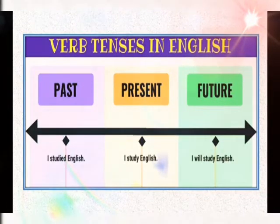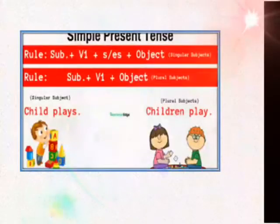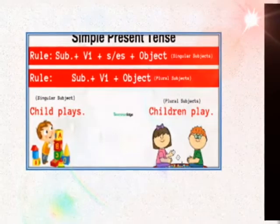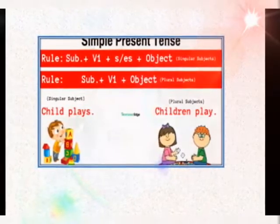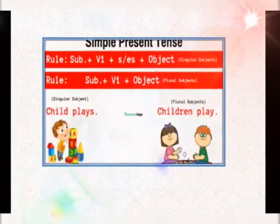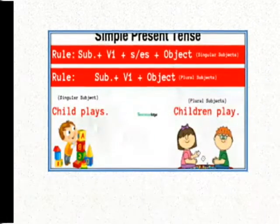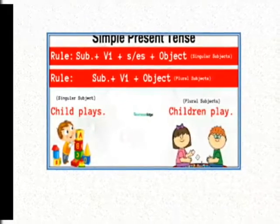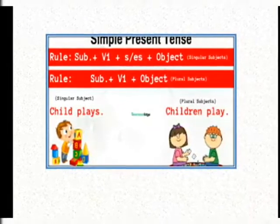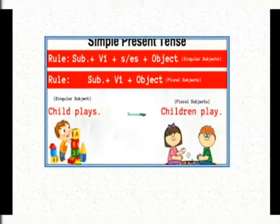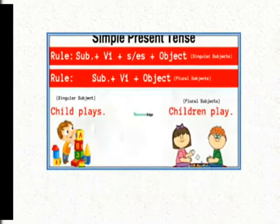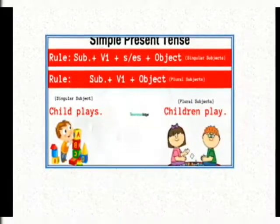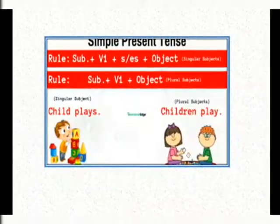Simple present tense tells us about the activities which happen in present time — activities which are universally true. The rule of simple present tense is: subject plus verb first form. We have done three forms of verb. So the formula is verb first form plus s or es plus object. This rule is for singular subjects — if the subject is singular, we add s or es. But if the subject is plural, we do not add s or es; we just put verb first form.